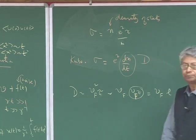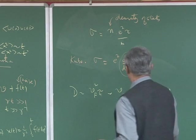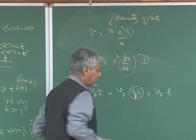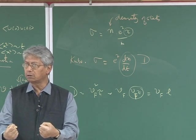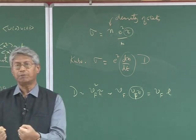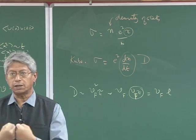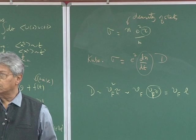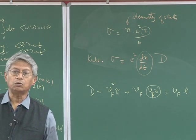You see that conductivity is proportional to tau, and tau is the mean time between two collision events. Clearly tau is temperature dependent, because if I increase temperature, the electrons become more vigorous. They bump into each other more often. So what will happen if temperature increases? Tau would decrease.